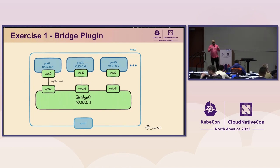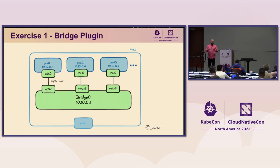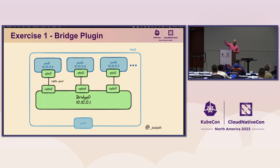Let's create a bridge CNI plugin. What we're going to do: define a CNI plugin that first creates a bridge called bridge0 if it doesn't exist. We'll assign an IP to the bridge — the bridge connects to the host network, giving us host connectivity. Then we'll define veth pairs — one veth pair is like a cord: you plug one end into the bridge and the other end into the container. So: bridge connected to host network, veth pair with one end attached to the bridge, one attached to the container.